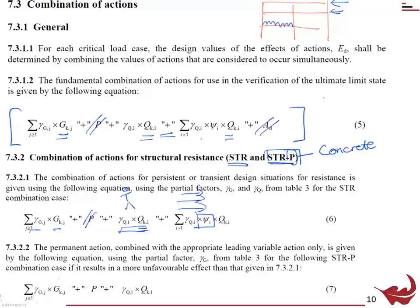Moving on, for the STRP case — think of this as a heavy structure where you want to make sure there's enough factor of safety. Normally we have around a 1.35 factor on the permanent load, the weight of concrete, just to give us a little extra factor of safety. Imagine a really heavy concrete structure with very little imposed load — if you used STR you'd only have roughly a 1.2 factor of safety, which is not quite enough. STRP beefs up the partial factor to account for that.